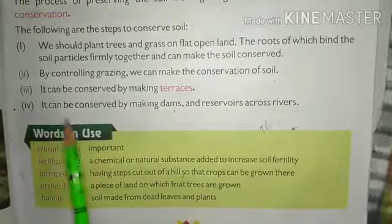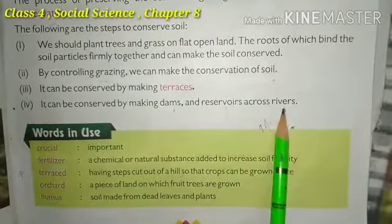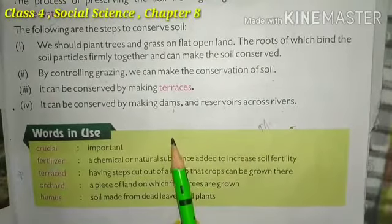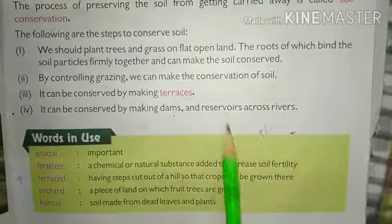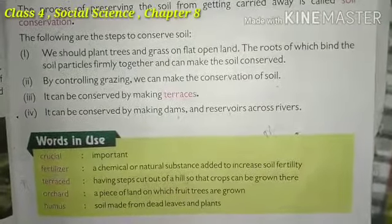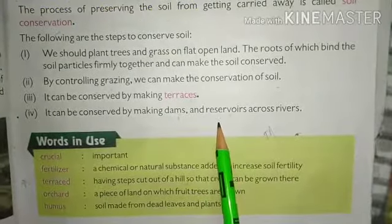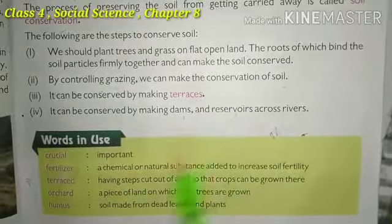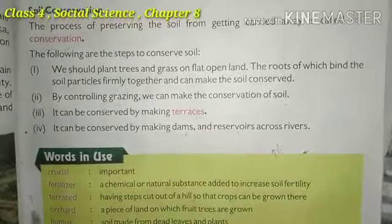Number four: soil can be conserved by making dams and reservoirs across rivers. When river water overflows, dams and reservoirs collect the excess water flow. This prevents the water from destroying our soil. These are all the steps for soil conservation.